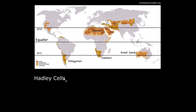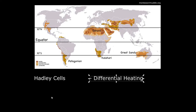What are Hadley cells? How do they form? How do they persist? How do they give rise to this pattern where deserts are near 30 degrees north and 30 degrees south? In order to understand Hadley cells, the big idea we need to keep in mind is differential heating. The Earth is not heated evenly across its surface, and this gives rise to certain atmospheric circulation patterns, namely Hadley cells.